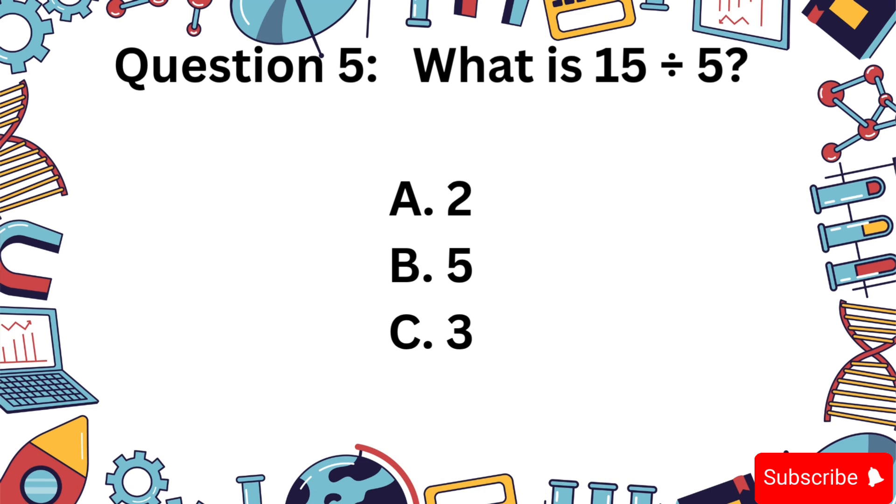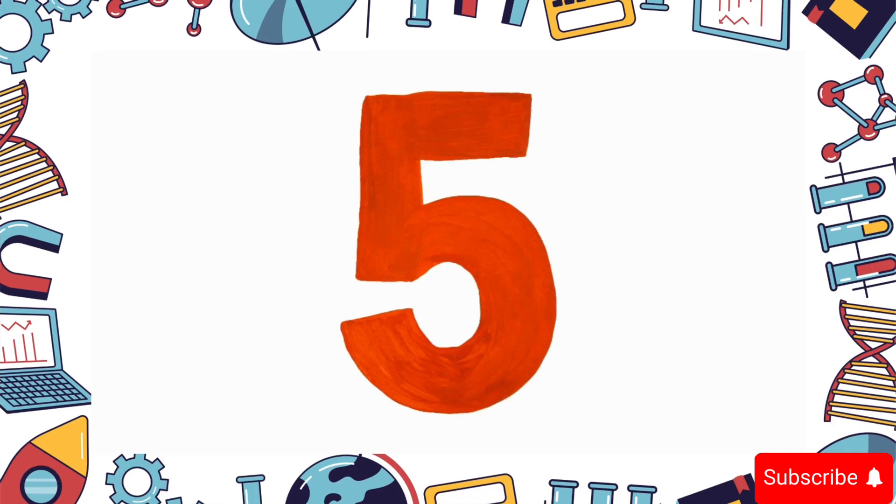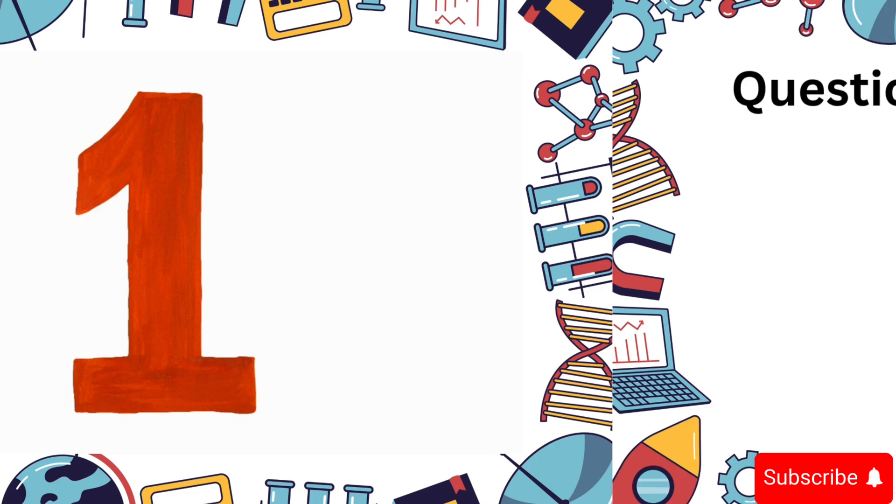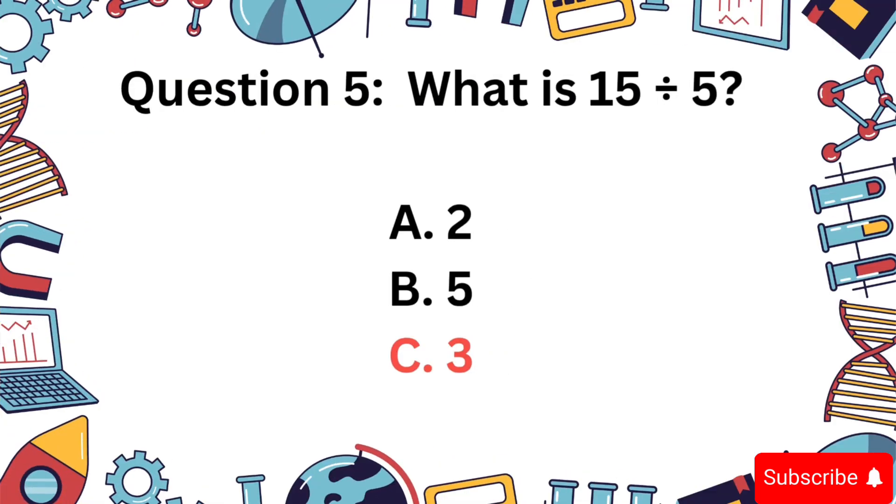Question 5. What is 15 divided by 5? Is it A, 2, B, 5, or C, 3? The correct answer is C, 3.